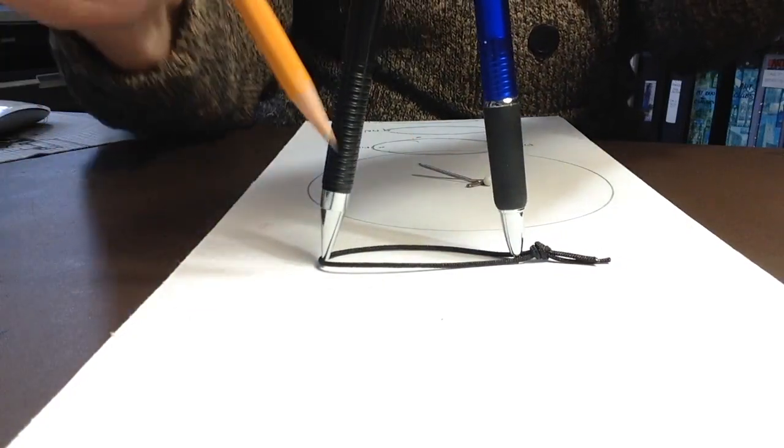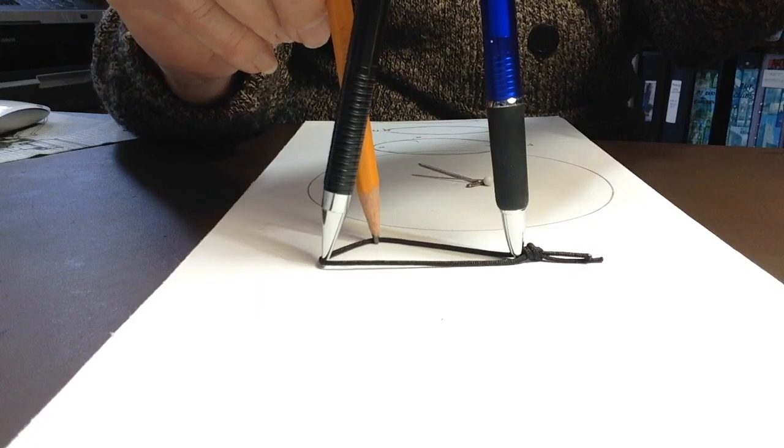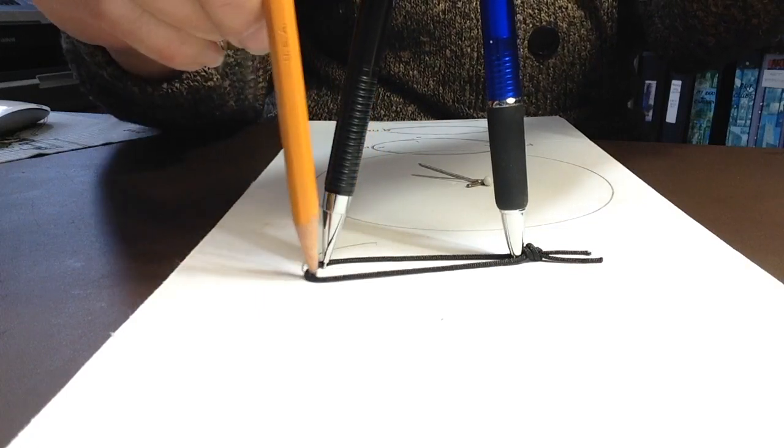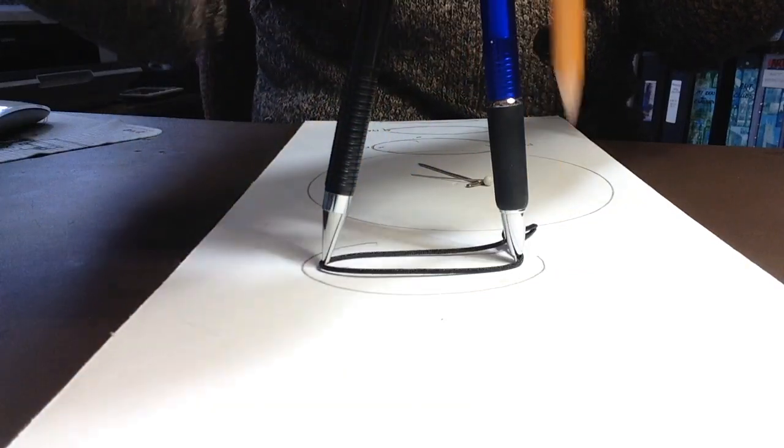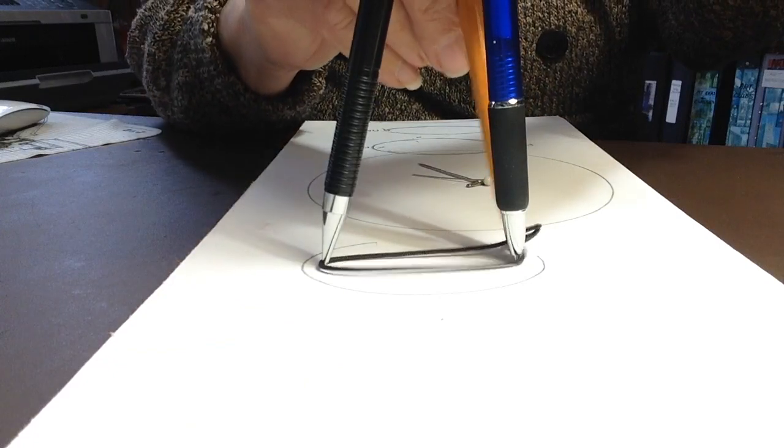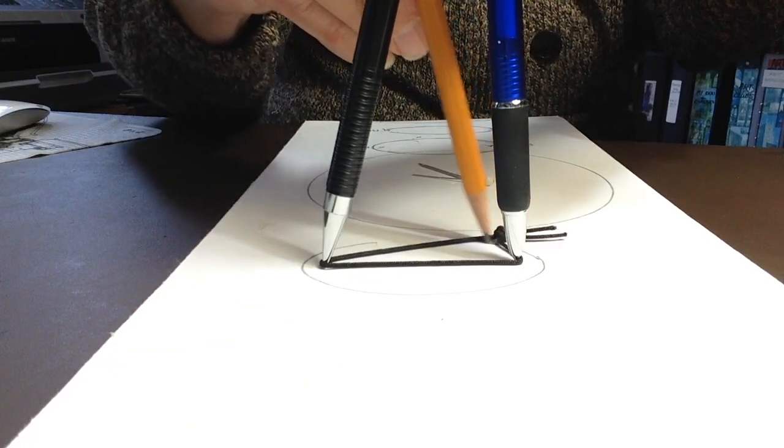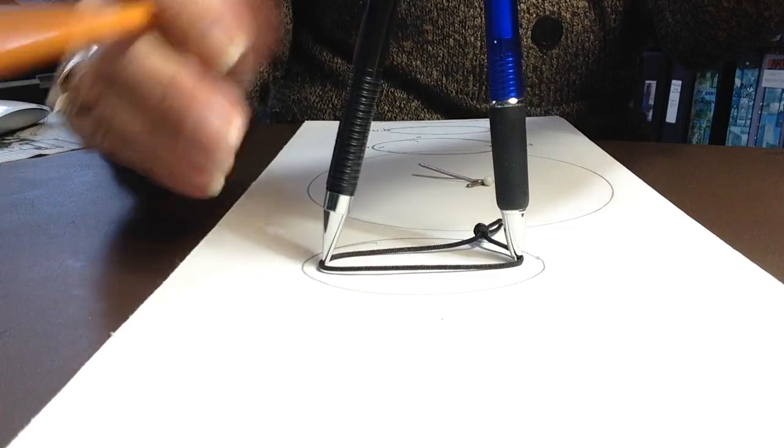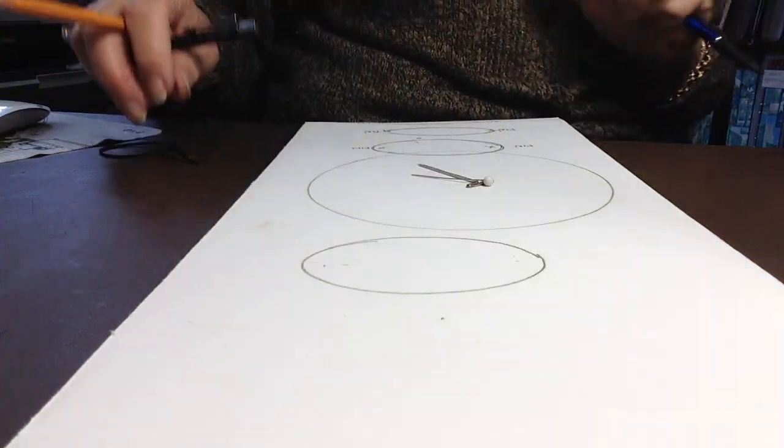Then you take the pencil that you're drawing, you pull the string out, and you just go all the way around, continuing to pull the string. And there you have an ellipse.